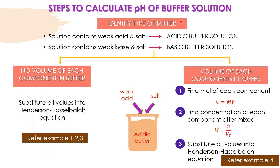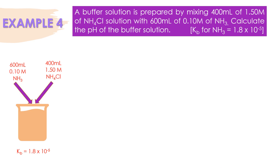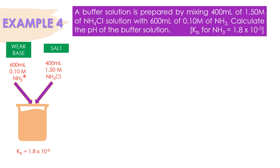First, we will identify the type of buffer solution. NH3 is a weak base. NH4Cl is a salt that contains the conjugate acid for NH3. So, the type of buffer solution is a basic buffer solution.